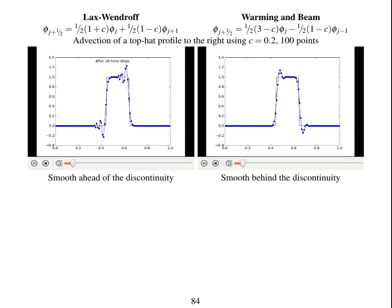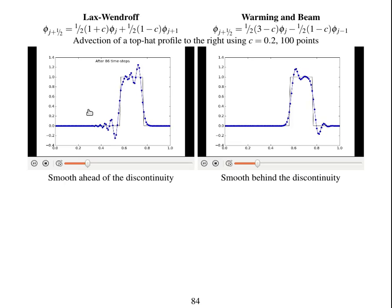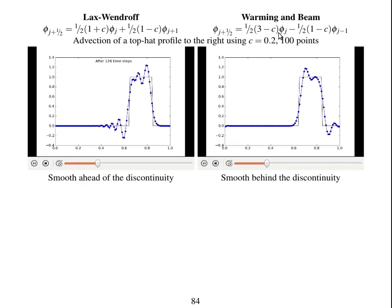Here are some numerical results of advecting a square wave to the right with a uniform wind. This is the result of Lax-Wendroff. This is a similar scheme called Warming and Beam.